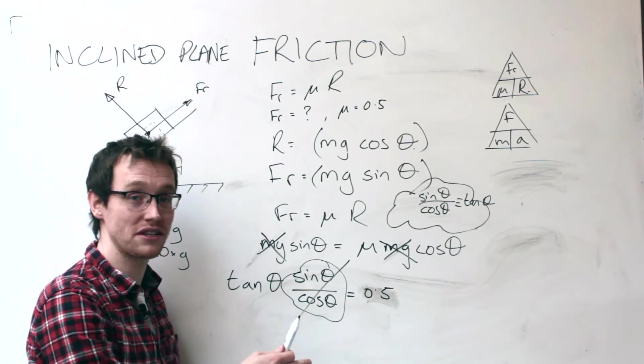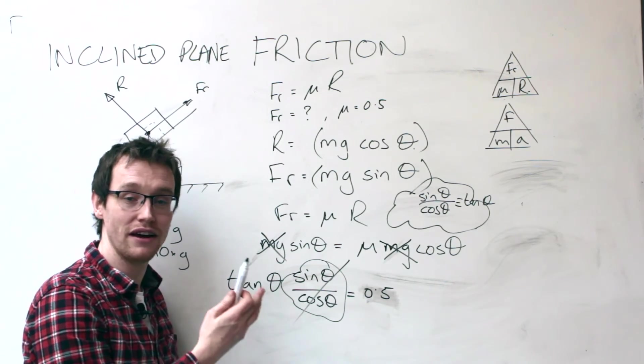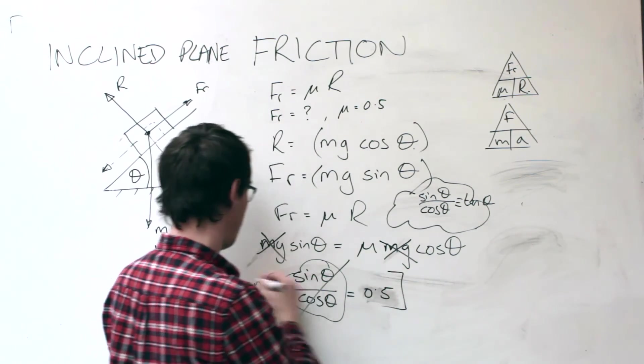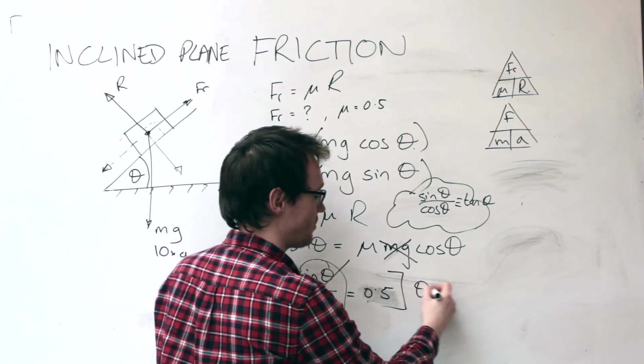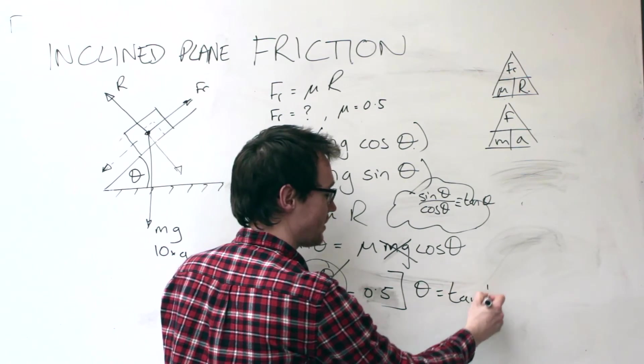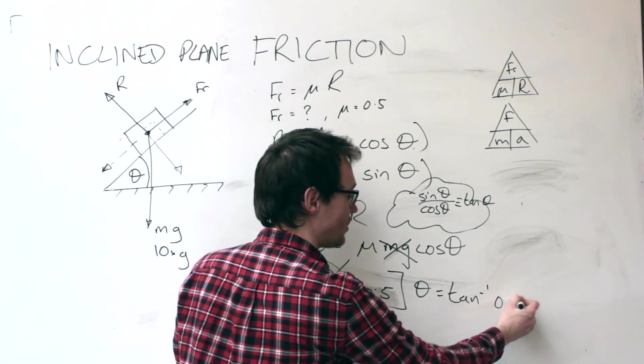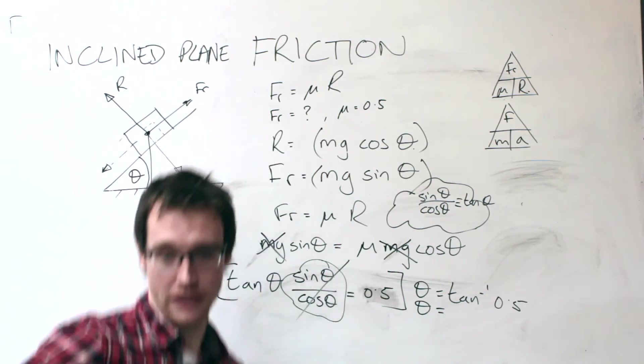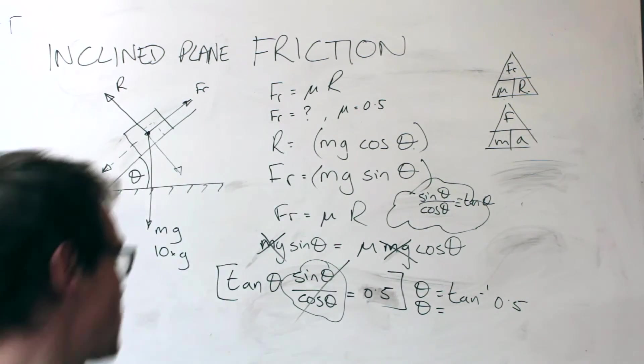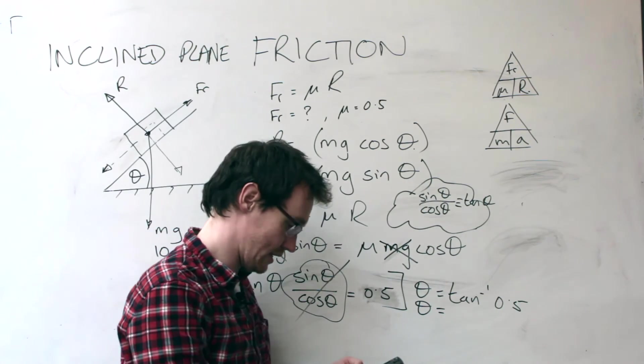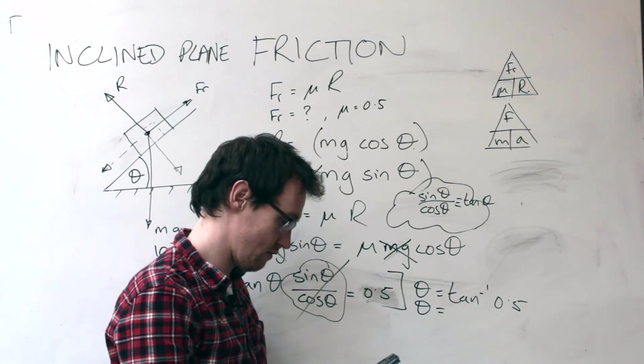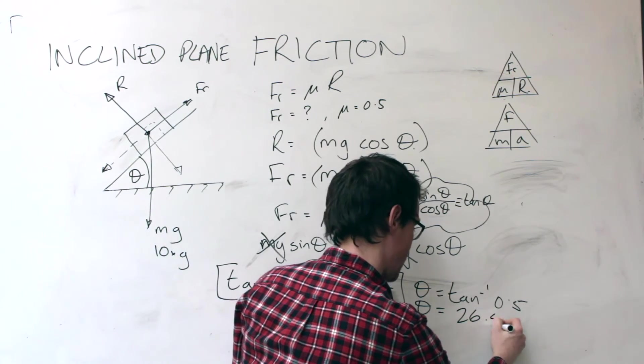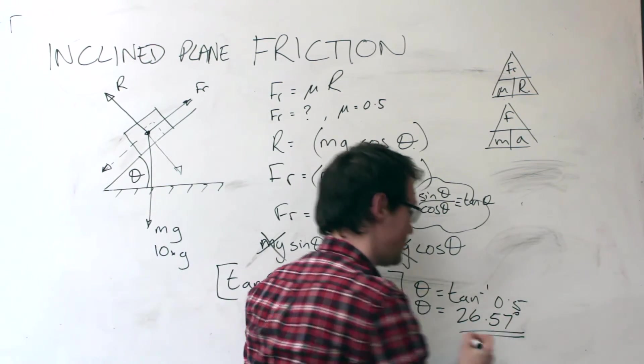That is a very simple GCSE level statement that you should be able to resolve on a scientific calculator. So to do that, we would literally go theta equals the inverse tan, shift and tan of 0.5. So it turns out the angle of sliding, the angle at which you need to tip this thing, is 26.57 degrees.